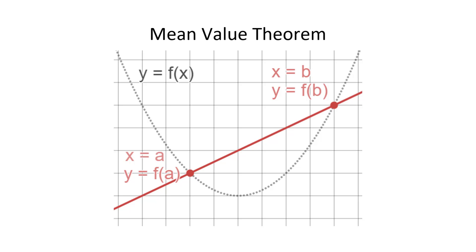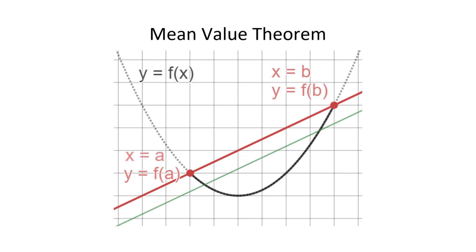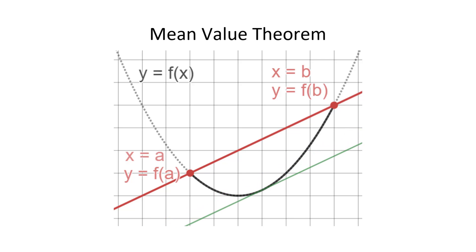The mean value theorem says that as long as the derivative of the function exists on the interval between x equals a and x equals b, then there is some point between x equals a and x equals b at which the slope of the line tangent to the curve is equal to the slope of the line through the endpoints. The x coordinate at this point is sometimes called x star.